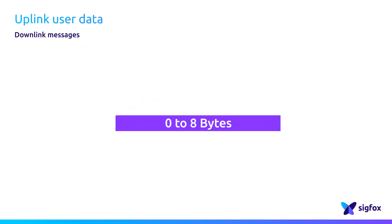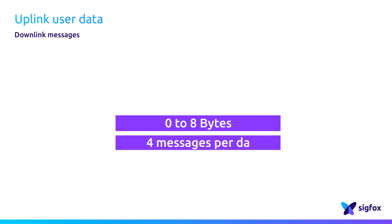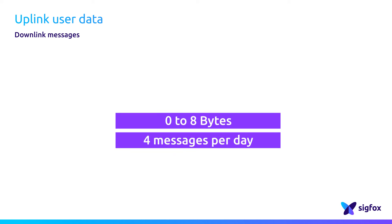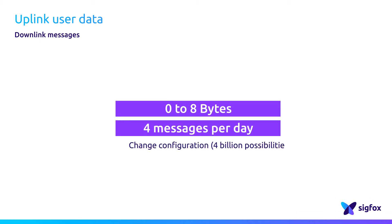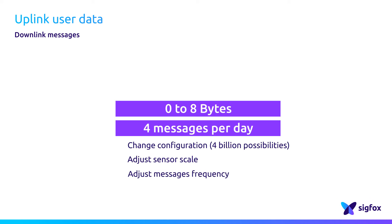Downlink message data payload is restricted to 8 bytes, and only 4 messages per day are allowed. With 8 bytes of data, you have 4 billion possibilities for the content of your messages. With that you can, for example, adjust the sensor scale or adjust message frequency.